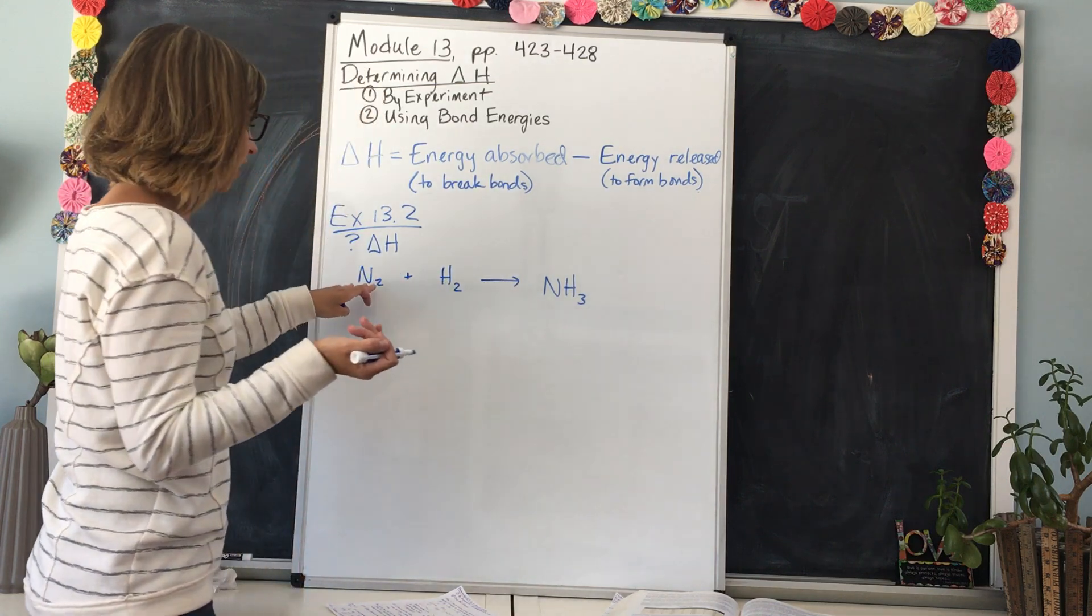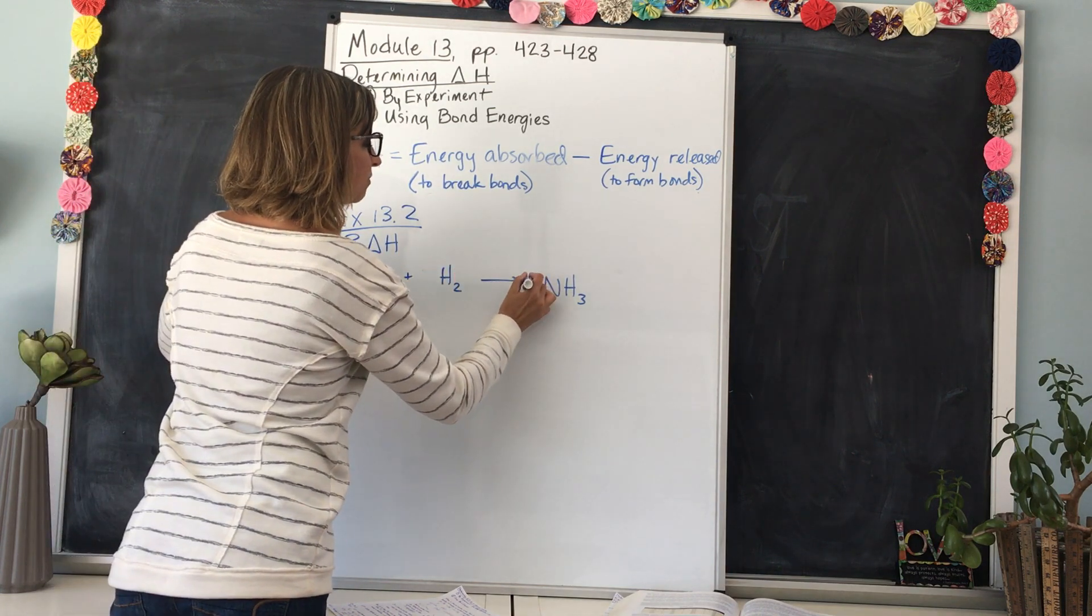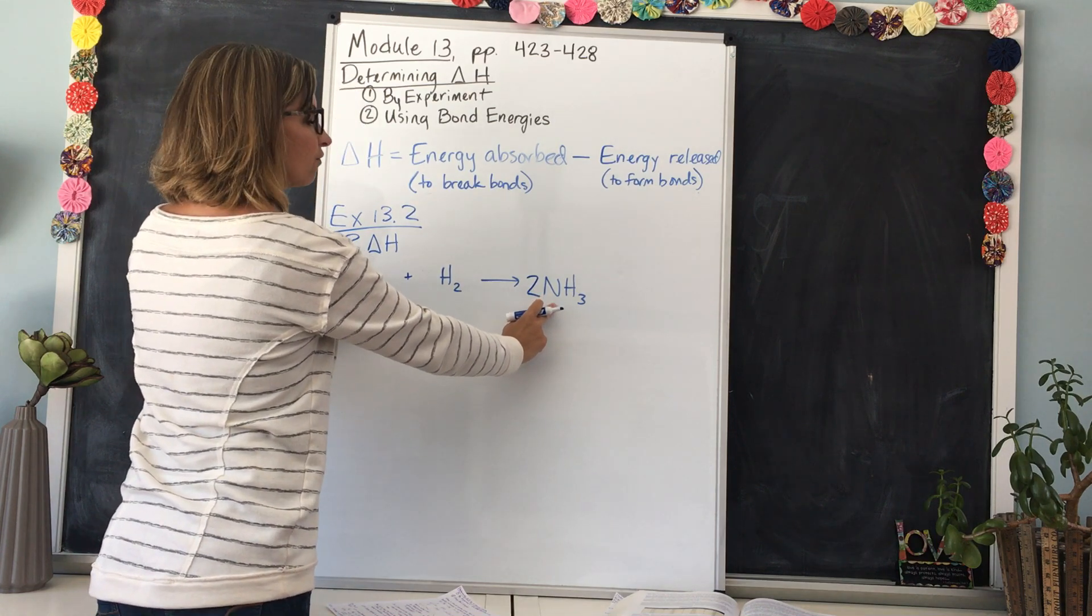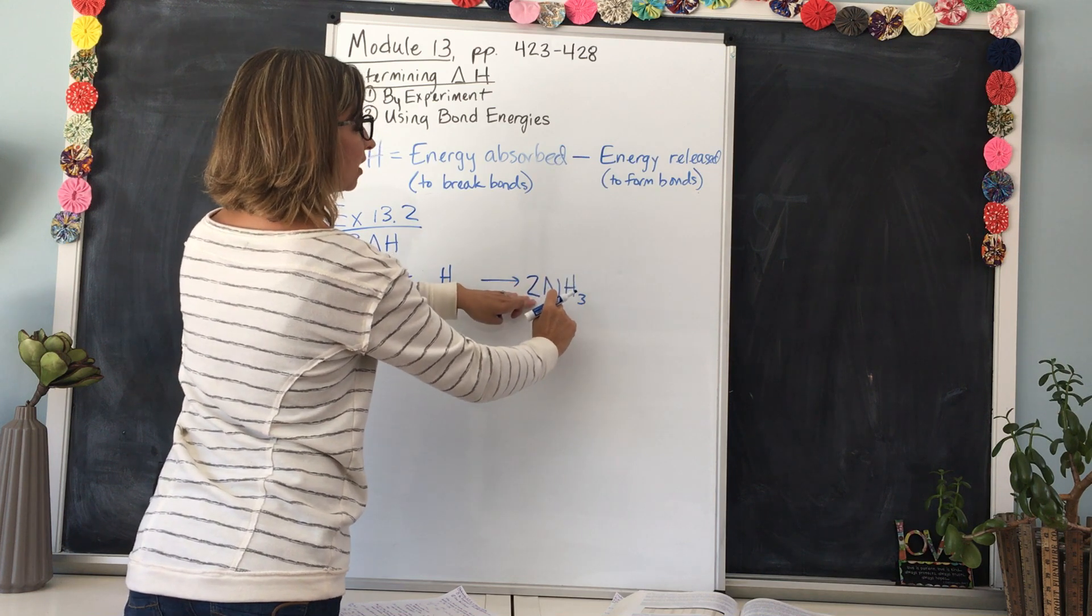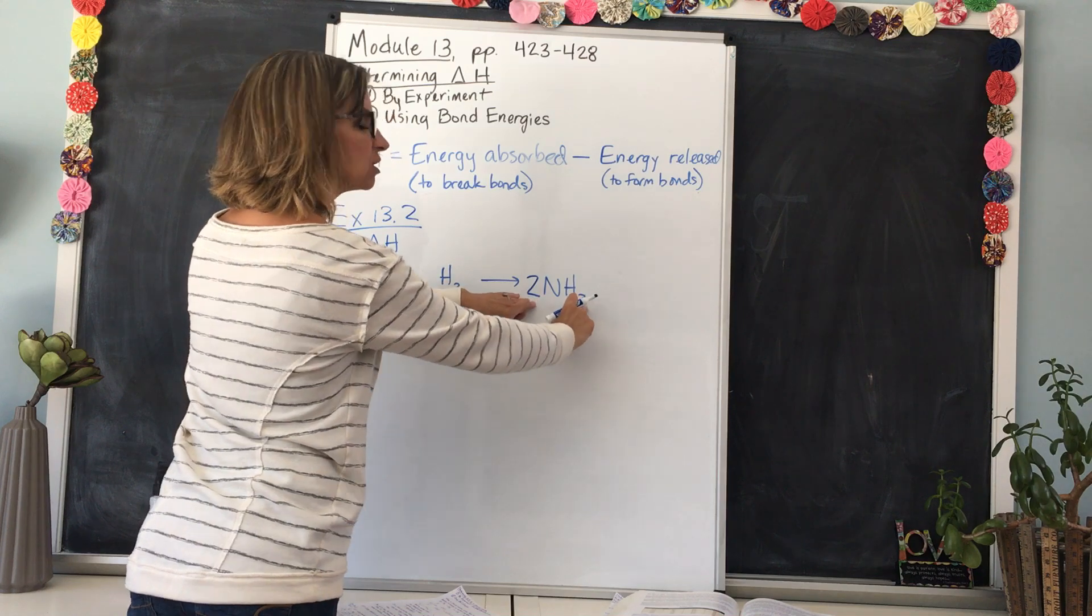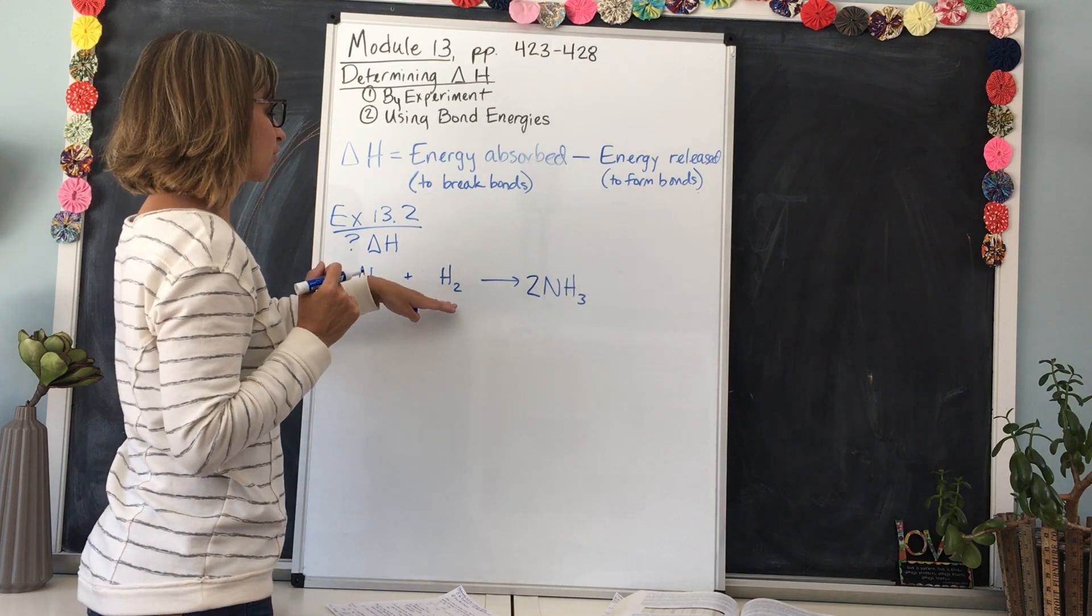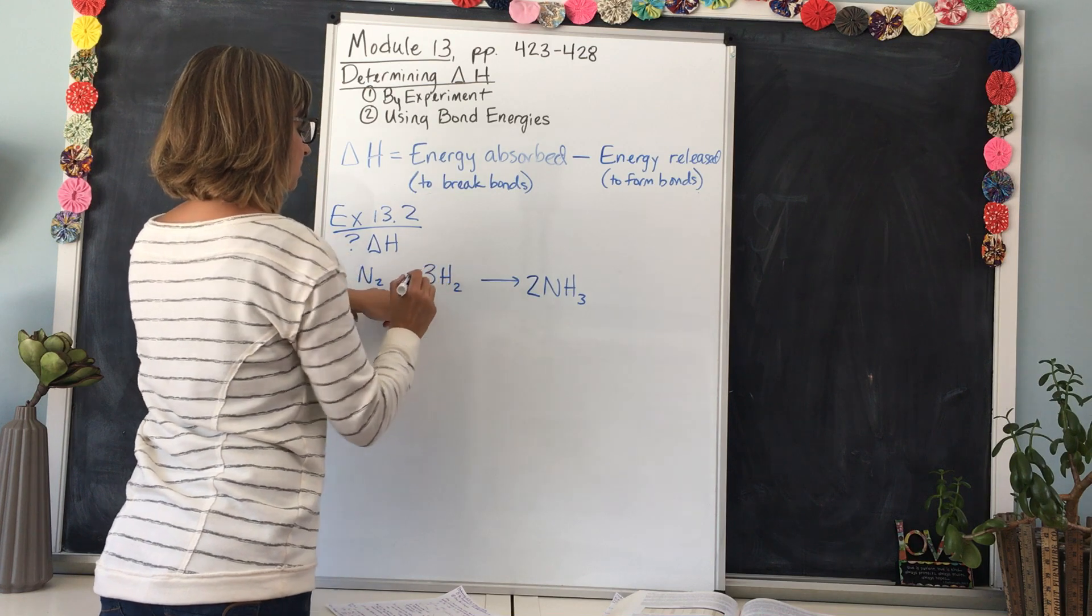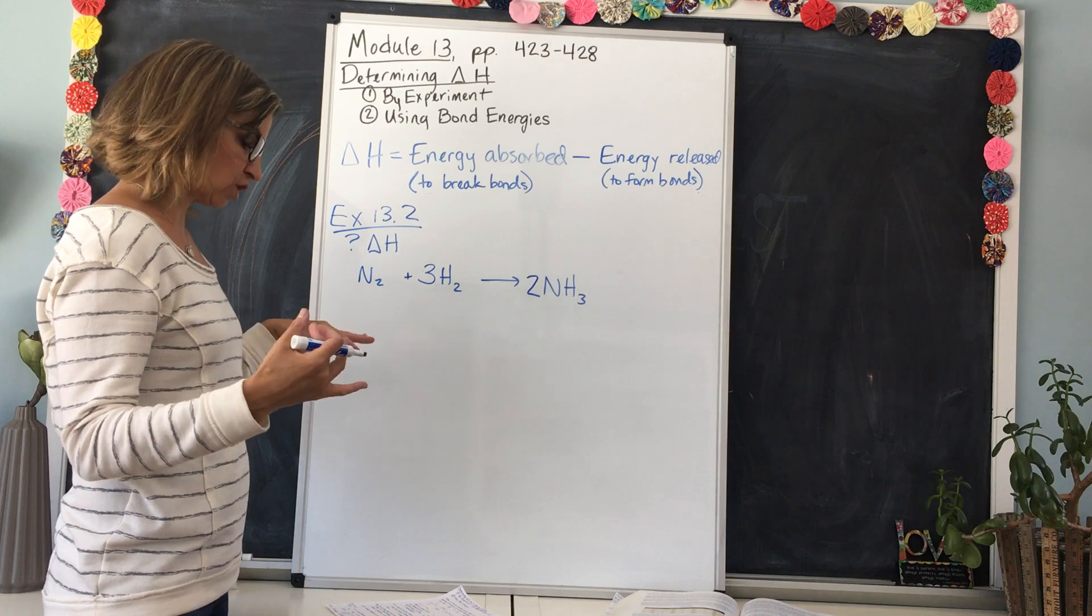And now we have to balance it. So we have two nitrogens over here, so we know that we're going to need a big two up front here to make two nitrogens. Now for hydrogen on this side, we have two of this whole compound, in each compound there's three hydrogens. So two times three is six, so we have six total hydrogens on the right, which means we need six over here. So what coefficient do I need out front? That is correct, we need a three because three times two then is six. Now we have the balanced equation.